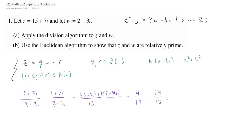Once I have done this division, I'm not getting a Gaussian integer here. So as a parenthetical, this implies that W, which is our 2 minus 3i, does not divide Z, which is 15 plus 7i. If W had divided Z, then this would end up being a Gaussian integer.